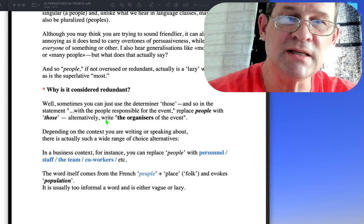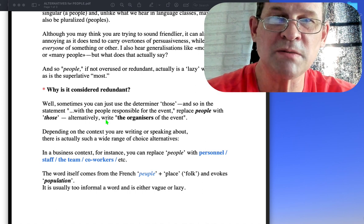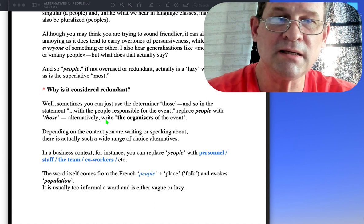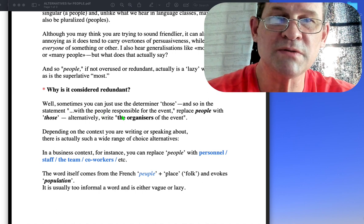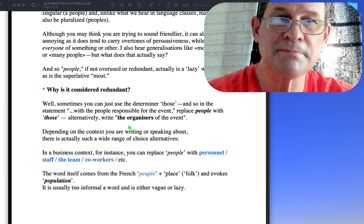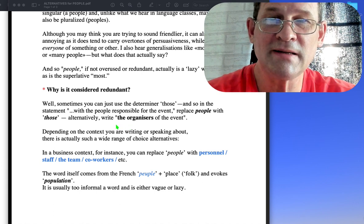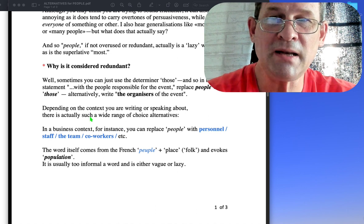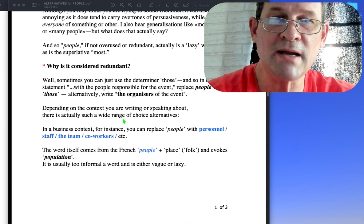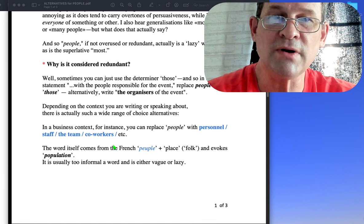Why is it considered redundant? Well, sometimes you can just use the determiner those. In the statement 'with the people responsible for the event,' just replace people with those - those responsible for the event. We know we're talking about humans, I hope. Alternatively, write 'the organizers of the event' depending on the context you're writing or speaking about. There is actually a wide range of choice alternatives.